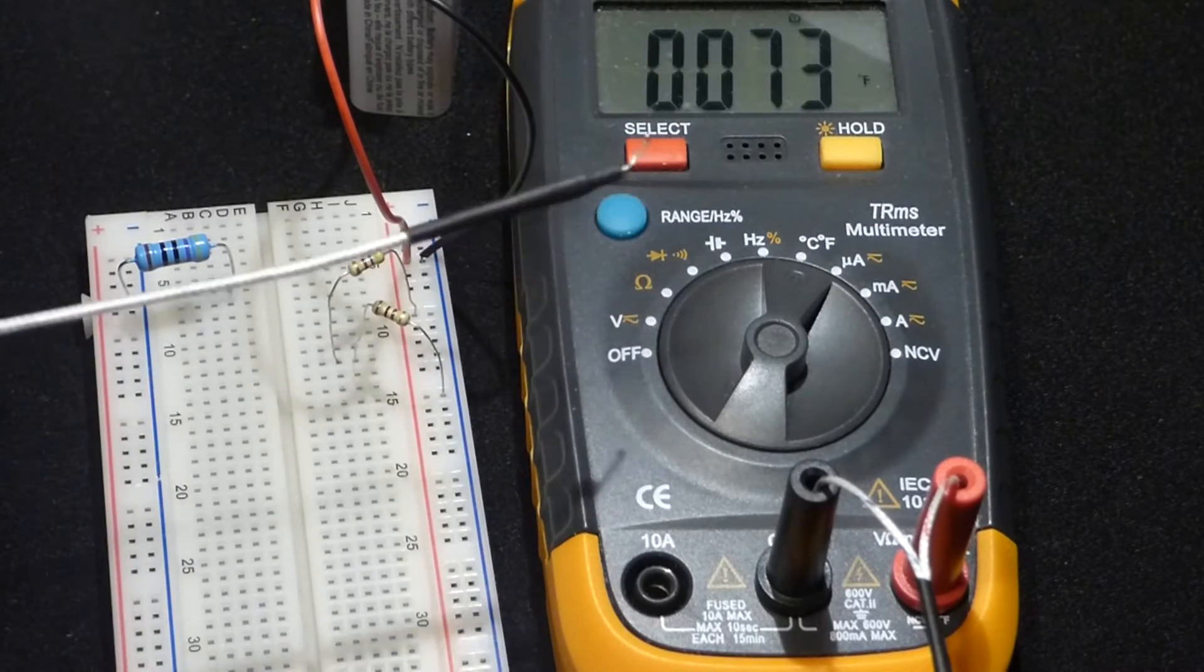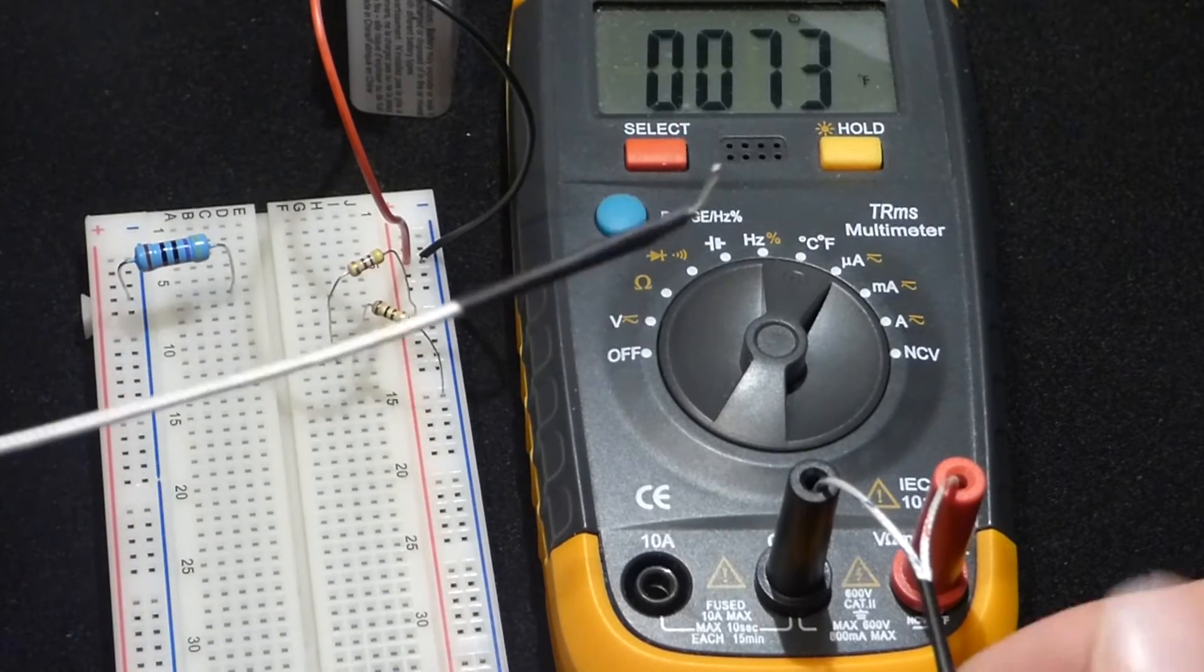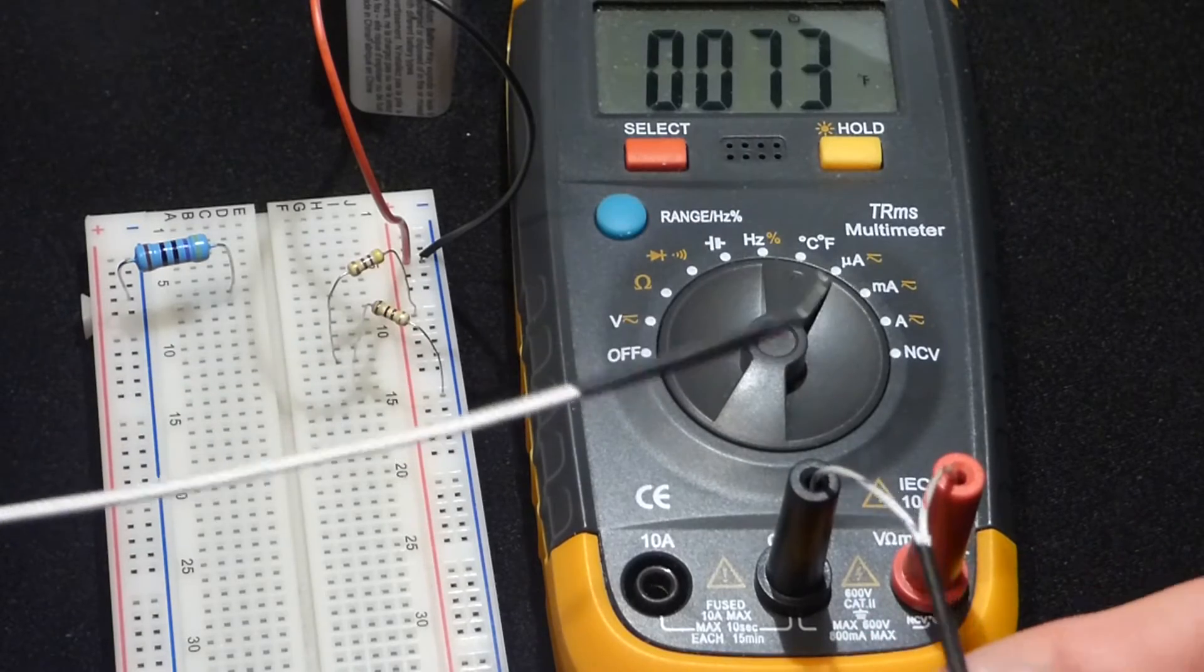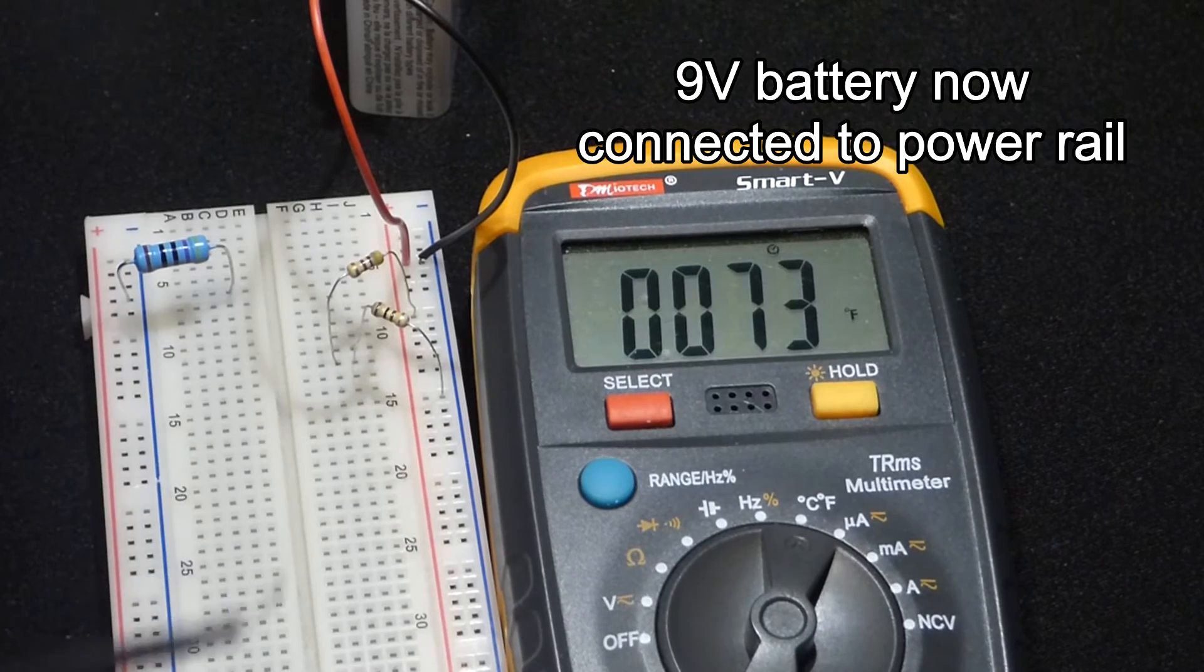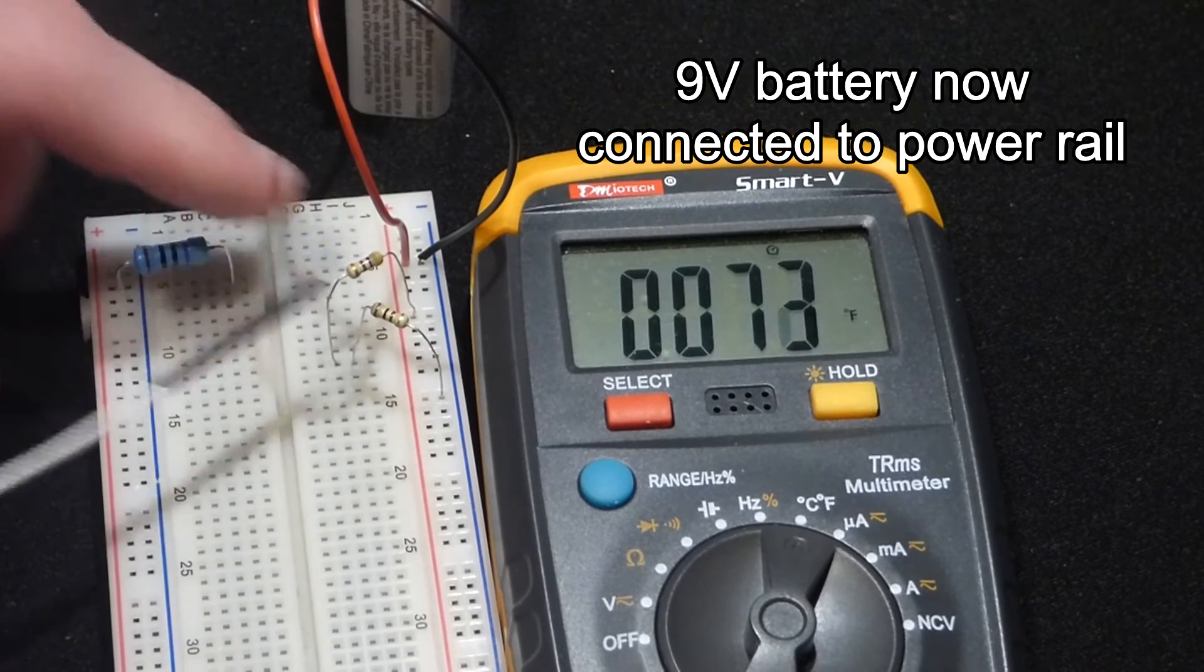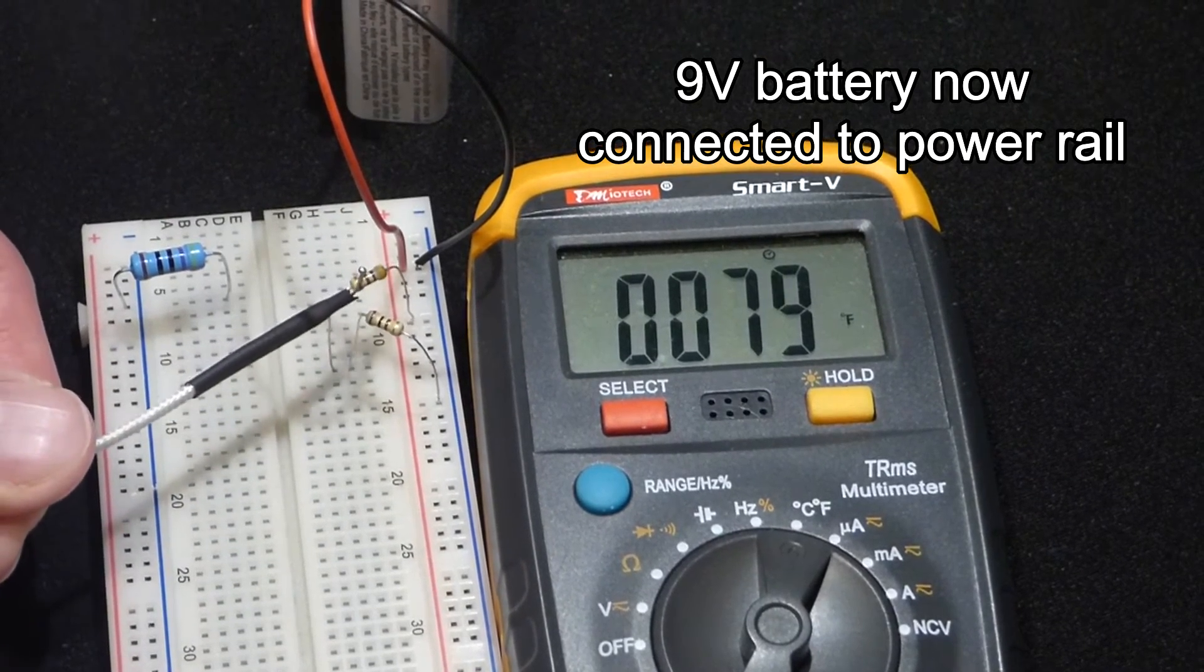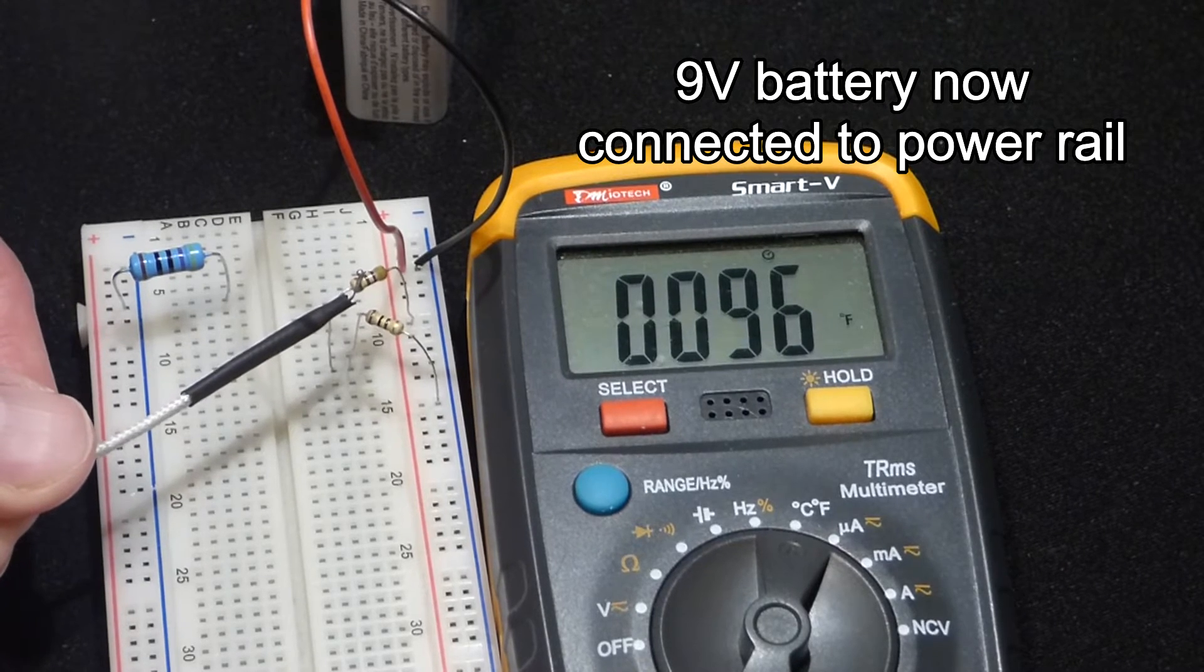Now I replace the black and red probe and instead have this thermocouple here. Both wires go to the thermocouple, and this will measure the temperature. First, we'll measure the 470 ohm resistor, the one on top here.